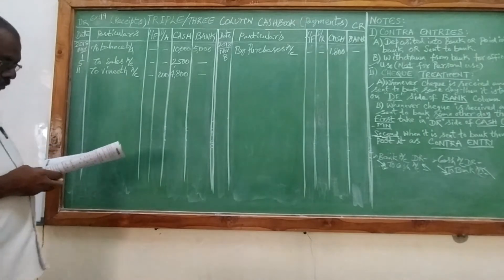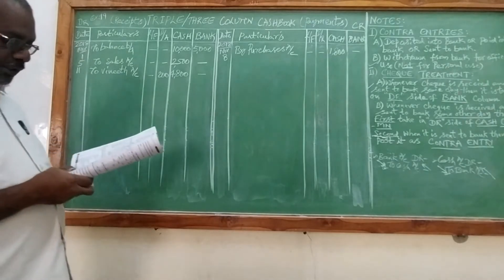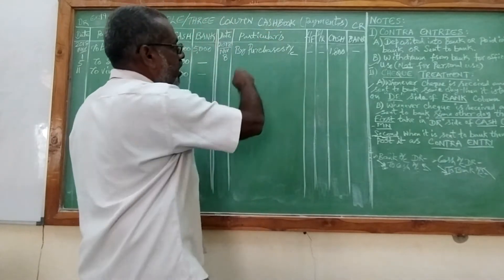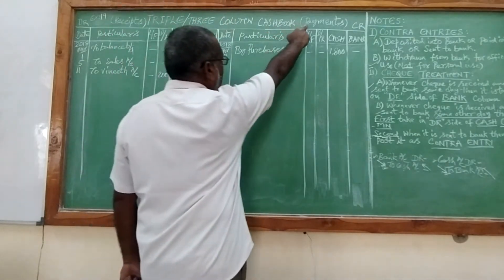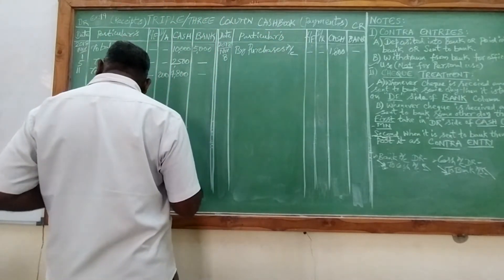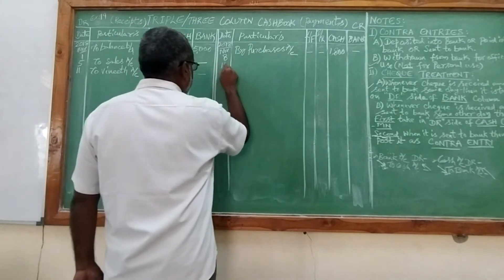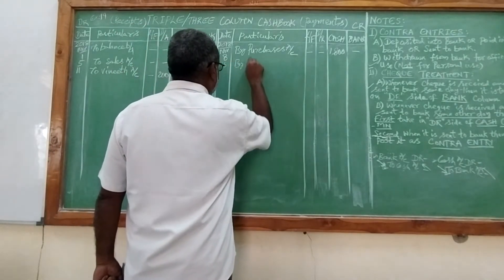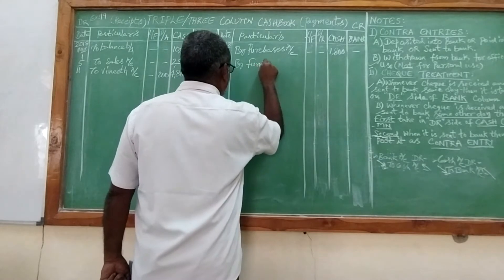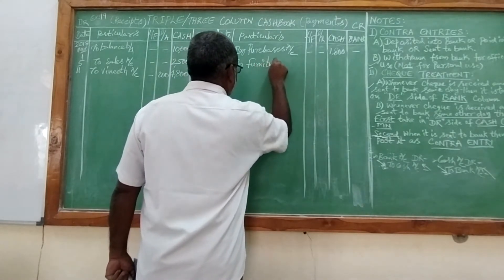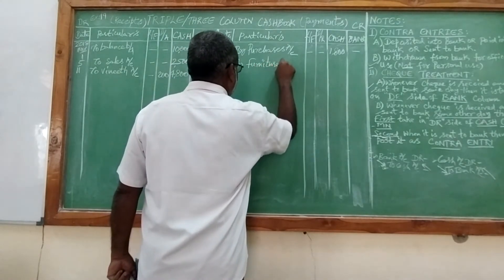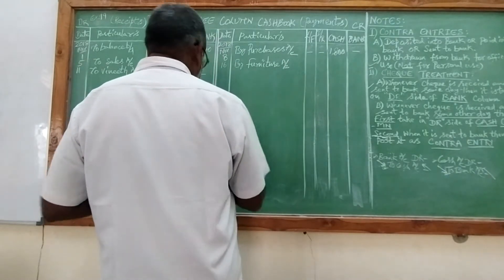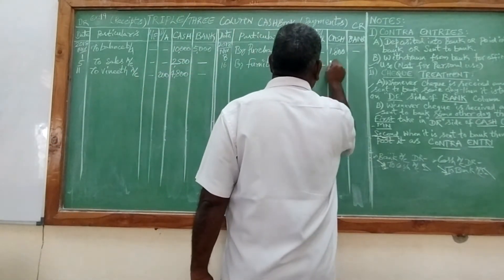November 16th: purchase furniture for cash. We are purchasing furniture and making payment by cash, so it will come on the credit side. November 16th, buy furniture — 3,500 in the cash column.